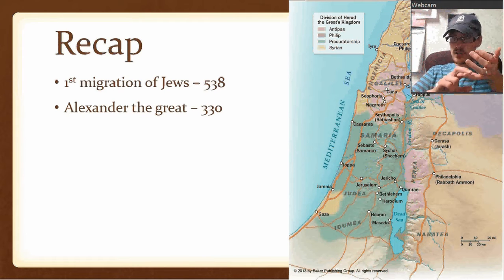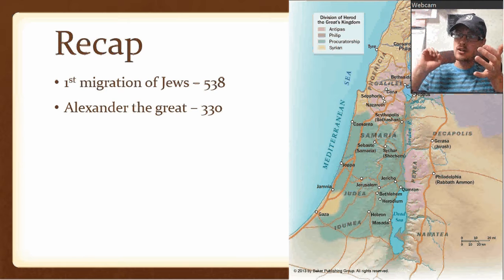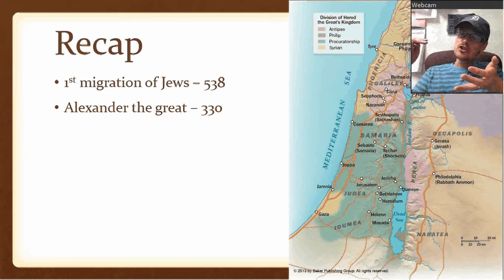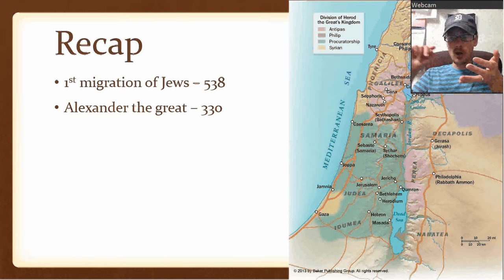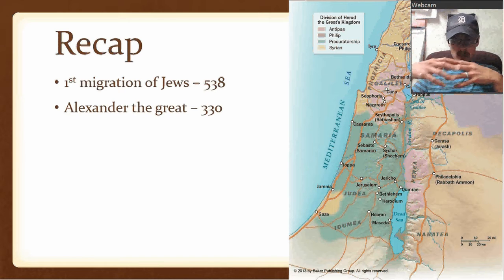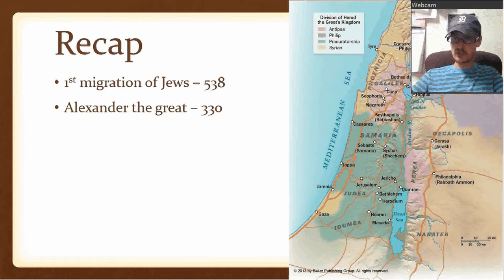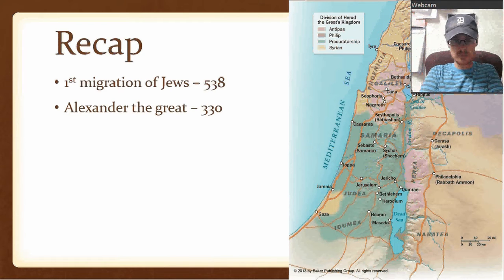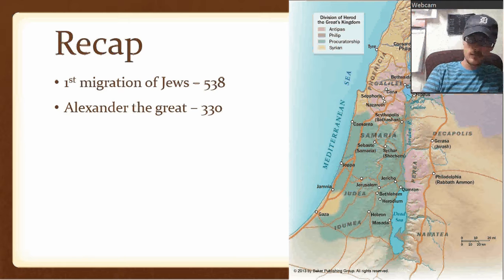Persia takes over in 539 and says you guys can return home in 538. The Jews actually go home, though not all of them — just the first group. Then fast forward past Ezra, Nehemiah, Esther, and past all that, past the last of the prophets.